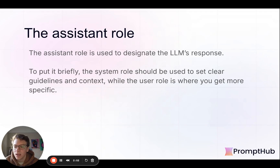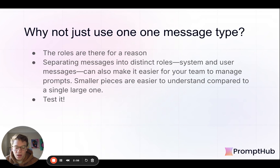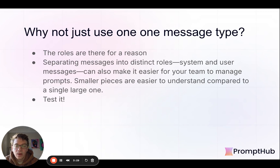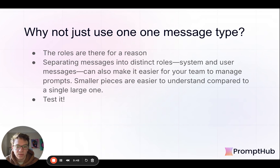So to narrow it down: the system role should be used to set clear guidelines and context at a high level, and the user role is where you get more specific. In cases where you're not using a chatbot — say you're just generating some content — you could have a system role and a user message, or just a user message. Why not stuff it all into the user message? I think the roles are there for a reason, and even if it harks back to chatbots, it makes it easier to structure things both for the LLM and for you and your team. A clear differentiation between high-level and low-level information makes it easier to iterate and move faster versus having one big prompt. And since this is new and changing, testing becomes really important.